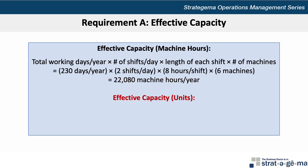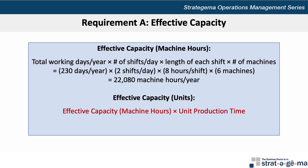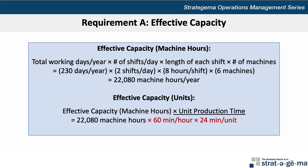The next step is to determine the effective capacity in units, which is accomplished by taking the effective capacity in machine hours we just calculated, multiplied by the unit production time. So we take our 22,080 machine hours, multiply by 60 minutes per hour, divided by 24 minutes per unit, which gives us 55,200 units per year.